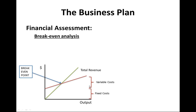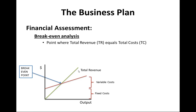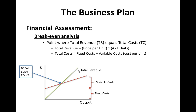Total cost is fixed plus variable. So total cost equals total revenue — that's the breakeven point. Everything beyond this would essentially be profit. Total revenue is basically price per unit times the number of units. Your total cost would be your total fixed cost plus your variable cost.